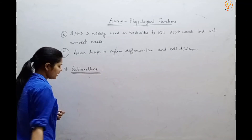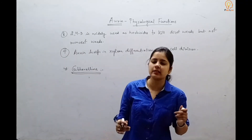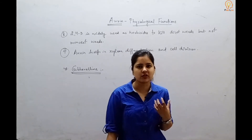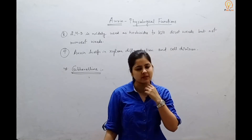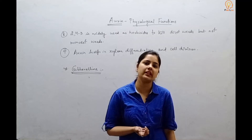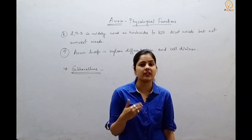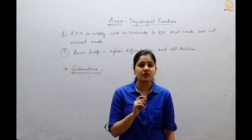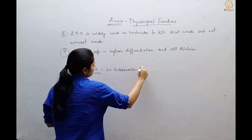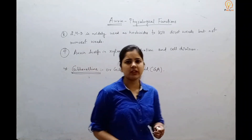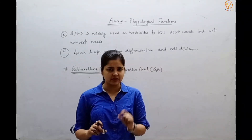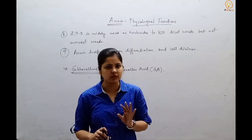Next we deal with gibberellins. Gibberellins are also a plant growth promoter hormone, and over 100 types have been discovered and isolated from fungi and other plant bodies. The nature of gibberellins is acidic — all gibberellins, also called gibberellic acid, are of acidic nature and are abbreviated as GA. Many forms such as GA1, GA2, GA3 have been discovered, but the most extensively studied form is GA3.